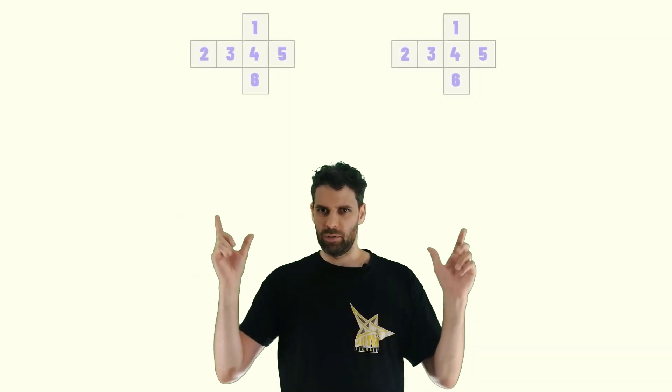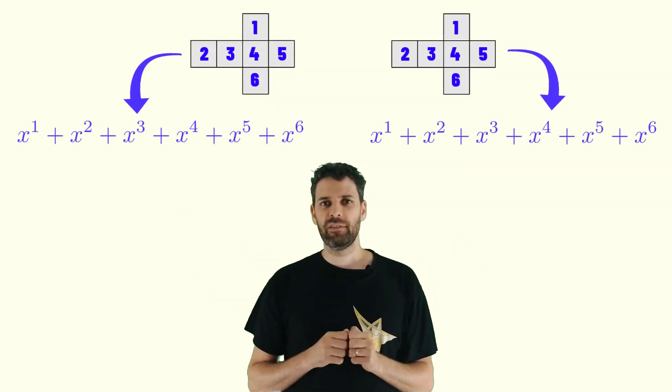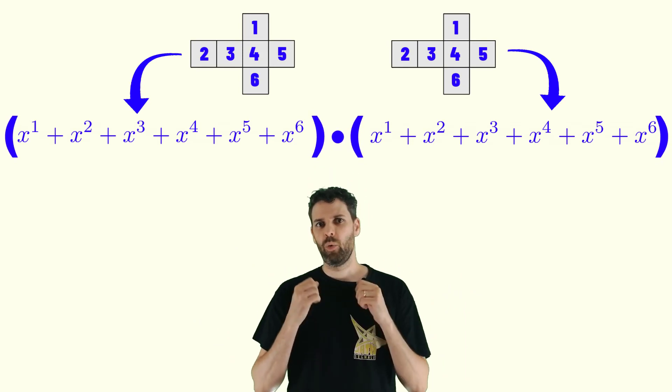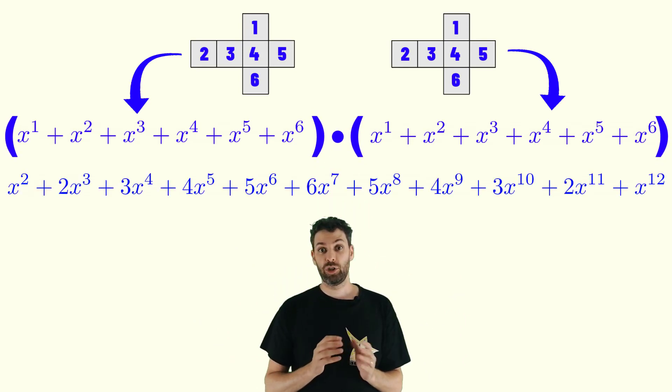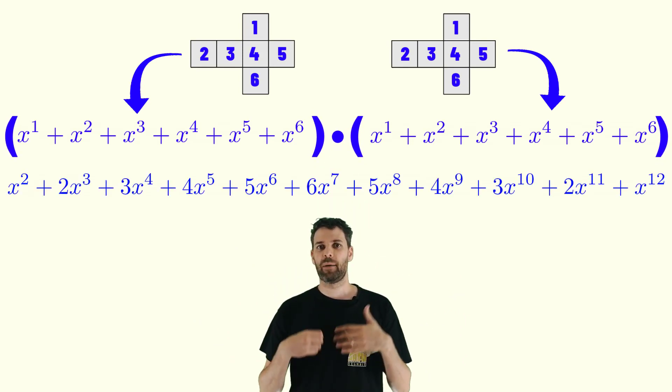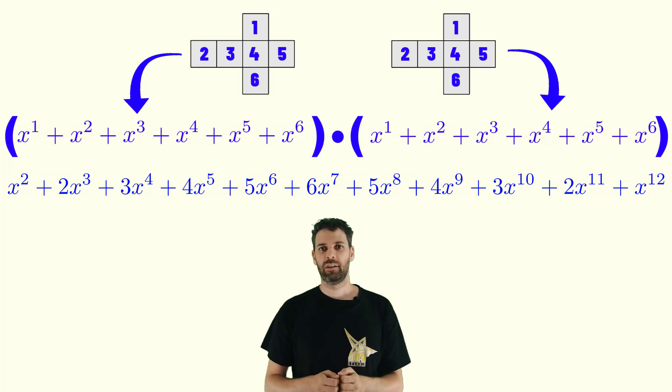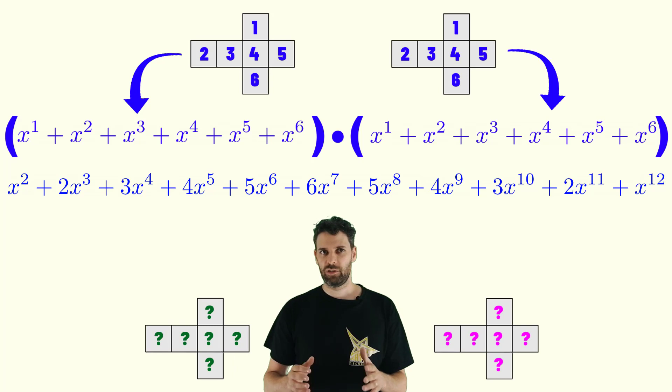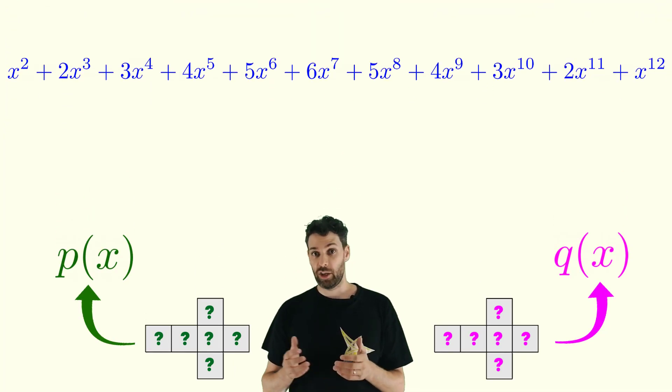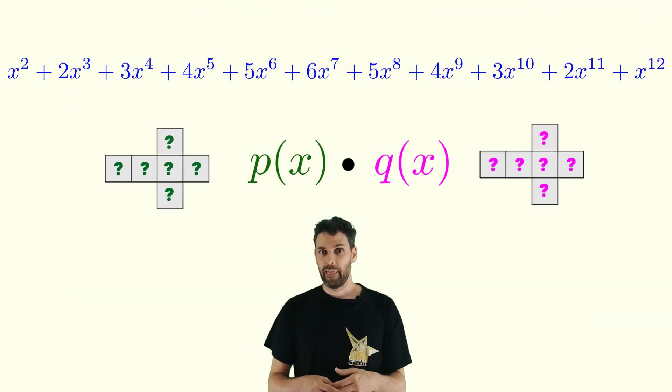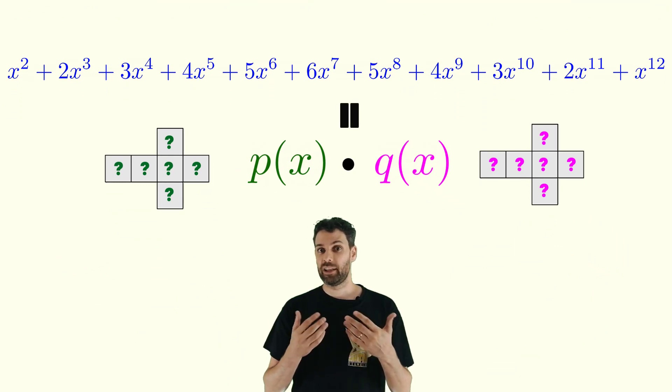Let's try to formulate our original problem but this time in terms of polynomials. So we add our two dice and so these polynomials and when we multiply them we obtain this polynomial which represents the distribution of the sum of our two original dice. Our aim is to construct two other dice and so two other polynomials such that when we multiply them we will obtain the same result as before.